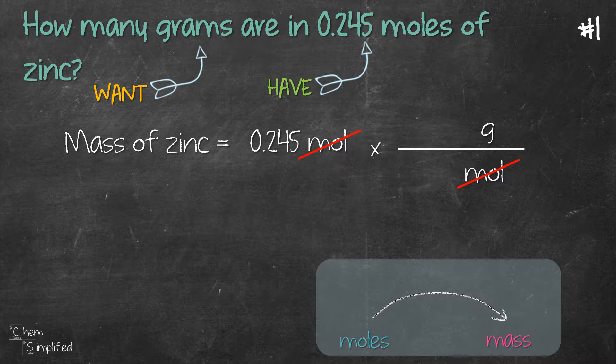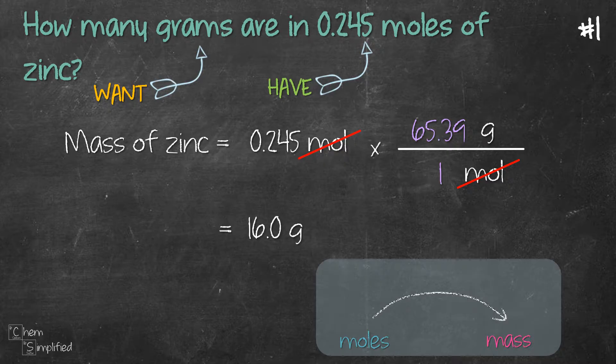We look up the atomic mass of zinc in the periodic table and we get 65.39. So we place that next to the grams, and since the molar mass is the mass for one mole, that means it's one next to the mole. So we do the math: 0.245 times 65.39 gives us 16.0 grams.